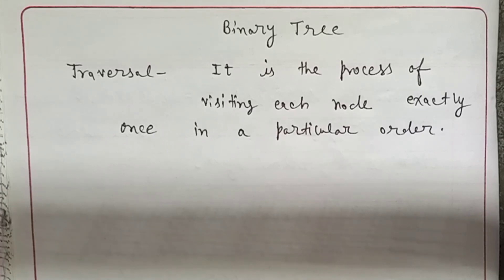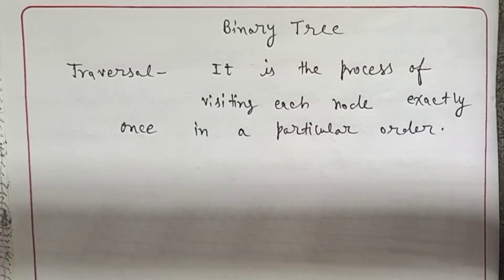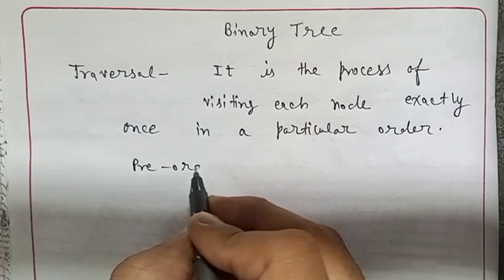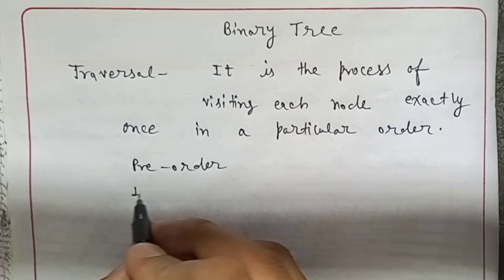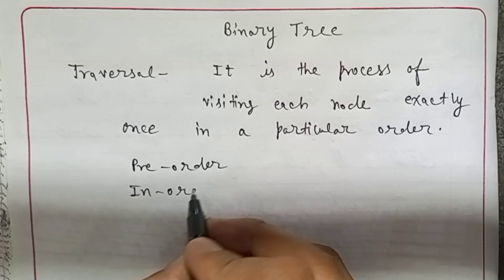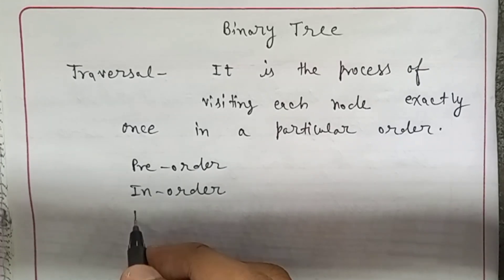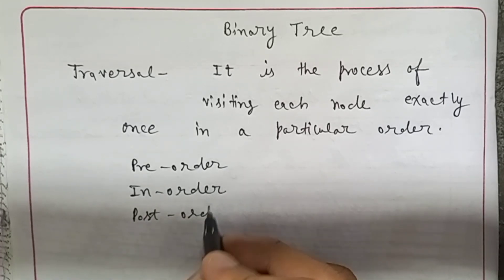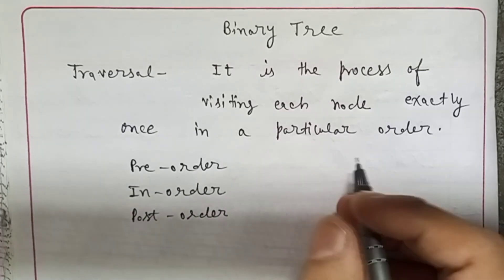Traversal is a process of visiting or accessing each node exactly once in a particular order. There are three types of binary tree traversal: one is pre-order, the second is in-order, and the third one is post-order.